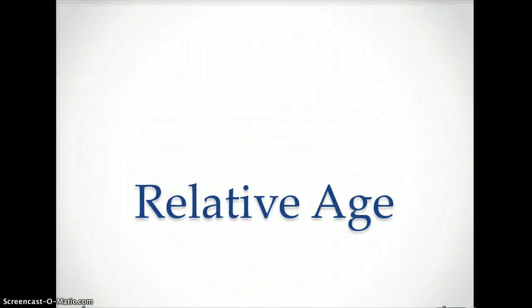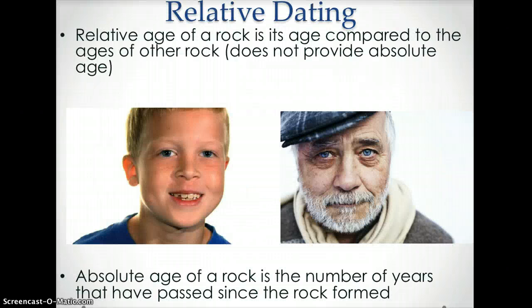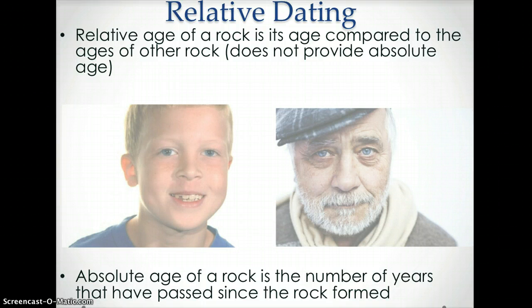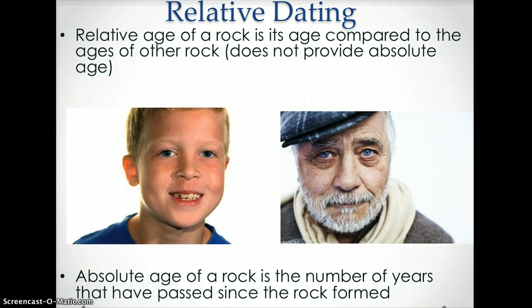This video reviews relative age and relative dating. The relative age of rock is its age compared to the ages of the other rocks around it. It does not provide an absolute age. For example, by looking at these two images, you could use relative dating to judge that the boy is younger than the older man.